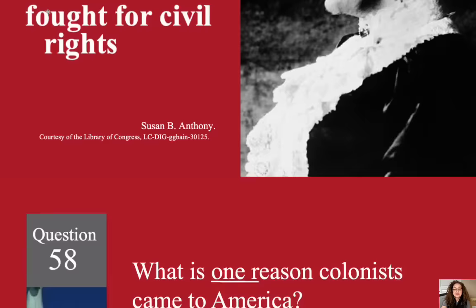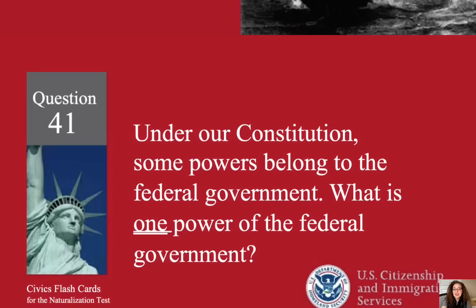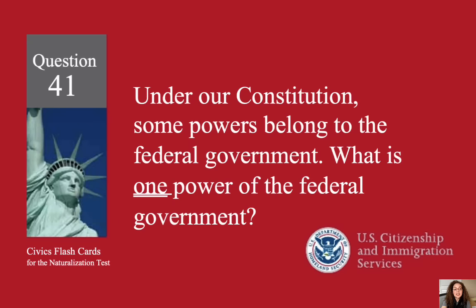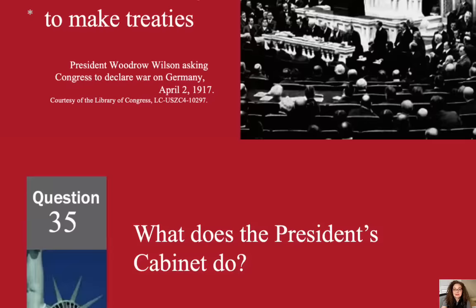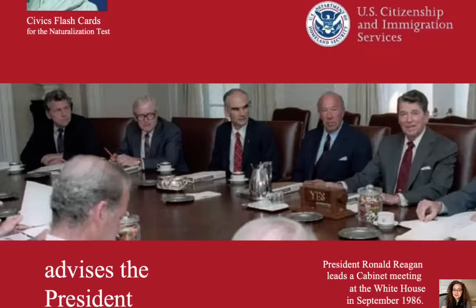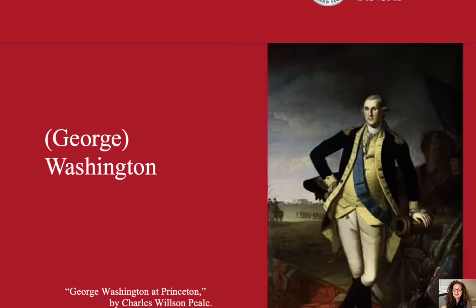What is one reason colonists came to America? For freedom. Under our Constitution, some powers belong to the federal government. What is one power of the federal government? To print money. What does the President's Cabinet do? Advises the President. Who is the father of our country? Washington.